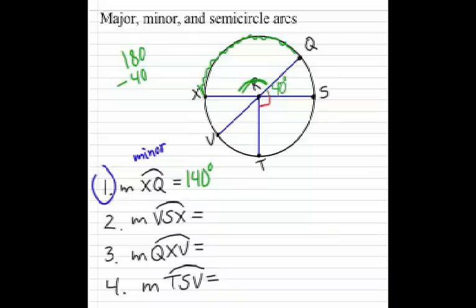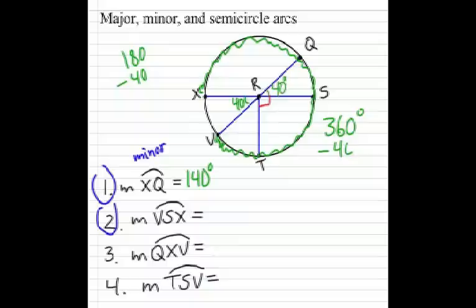On number two, the measure of arc VSX. The important thing to remember here is that this is a 40 degree angle. We have vertical angles inside. So it is going to be 360 degrees all the way around the circle, take away the 40 that's left. So 320 degrees for that major arc.